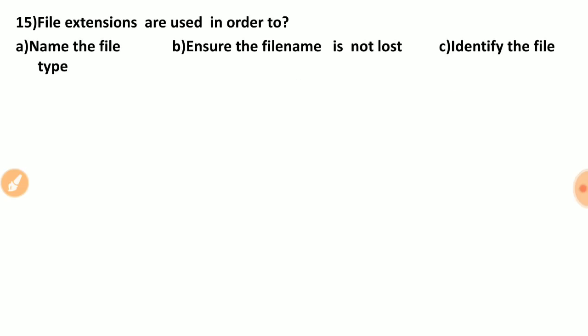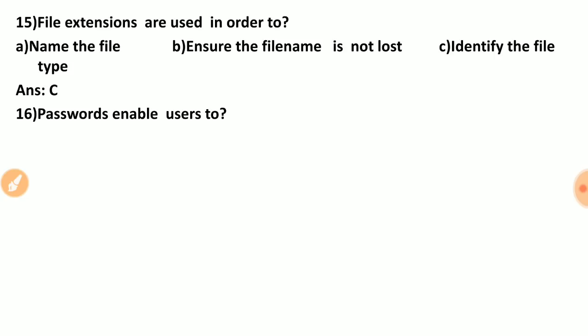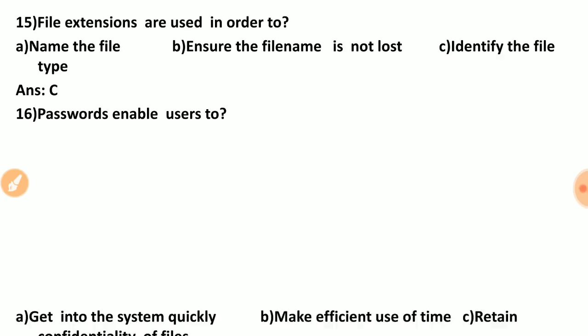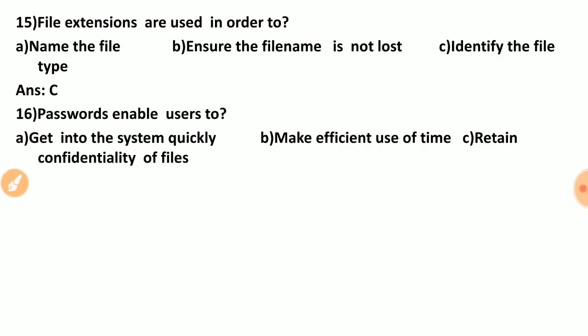Question fifteen: file extensions are used in order to do what? Options include: name the file, ensure the file name is not lost, identify the file type. File extensions like .doc, .ppt, .pptx, .jpg, .pdf are used to identify the file type.